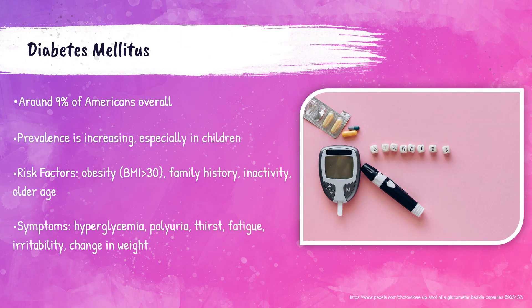Diabetes mellitus is a very common disease in the United States, estimated to affect around 9% of Americans. It is characterized by an issue with insulin that leads to hyperglycemia, which means an increased glucose level in the blood. Other symptoms of diabetes mellitus include increased thirst, irritability, change in weight, and polyuria, which is an increase in urine output.